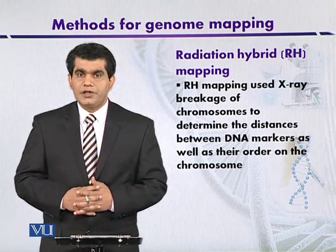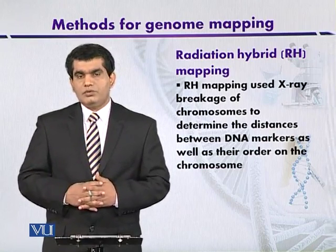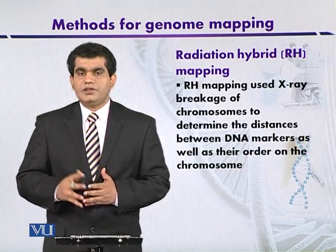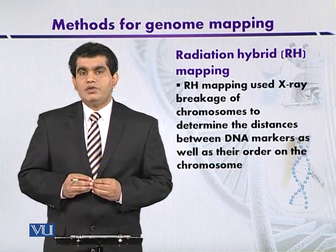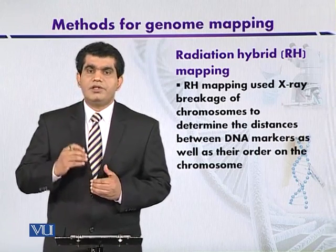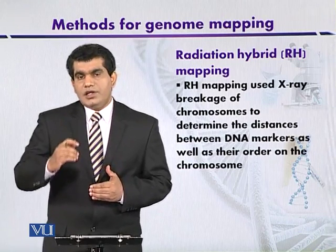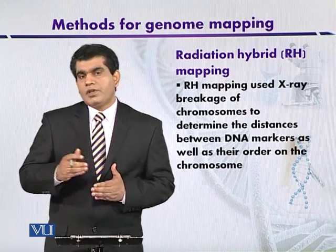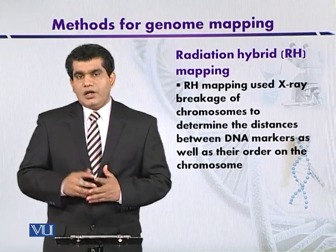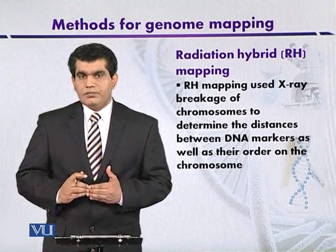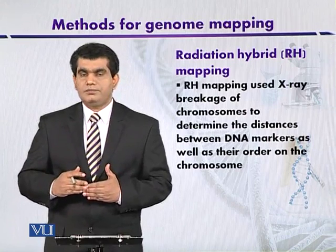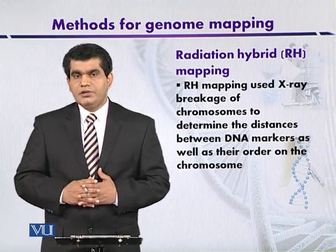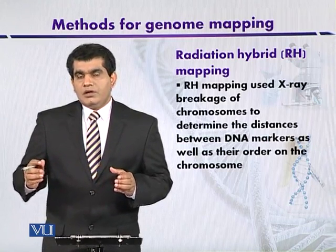The hamster is a rodent, a mammal. So we now have two cell types: a human cell that has been irradiated by X-rays and whose DNA has been fragmented or broken into different fragments randomly, and a hamster cell, which is a rodent cell that has not been exposed to X-rays.